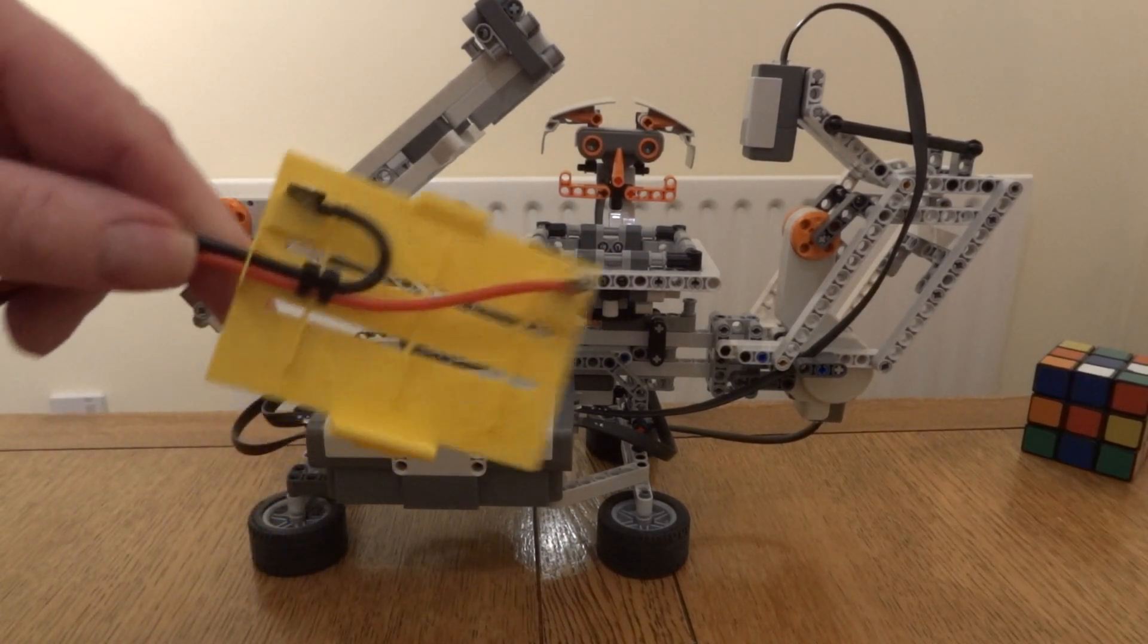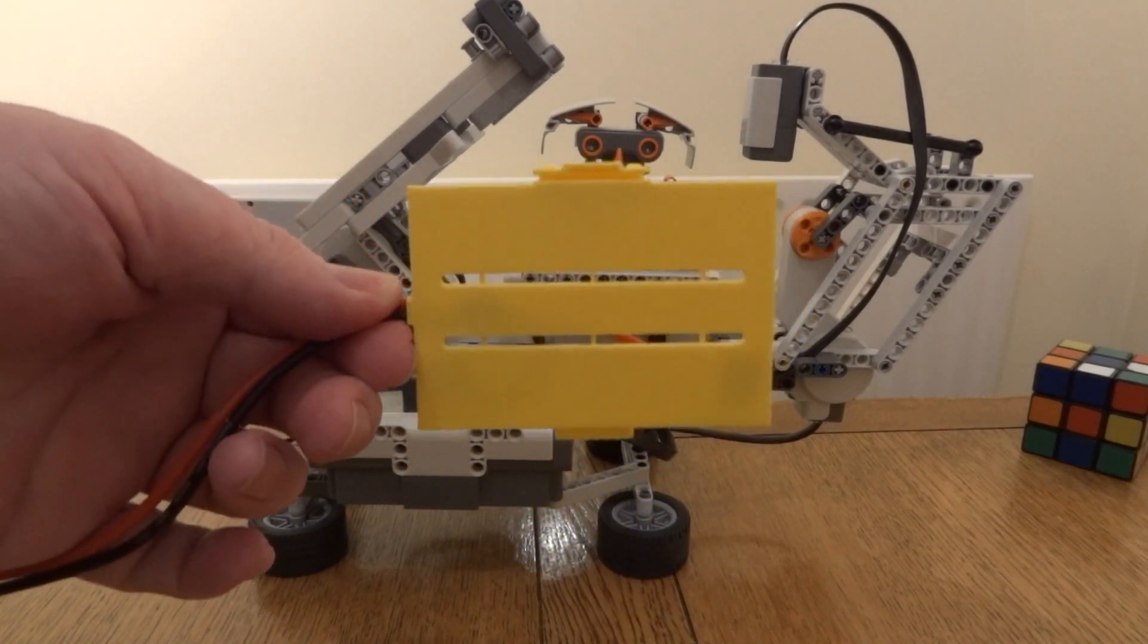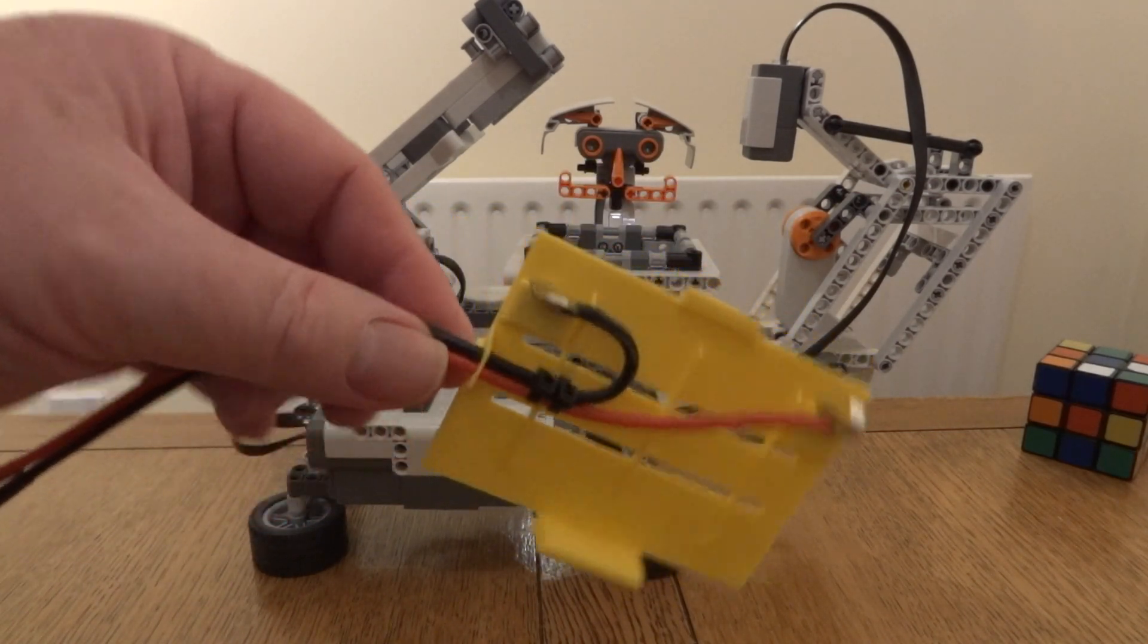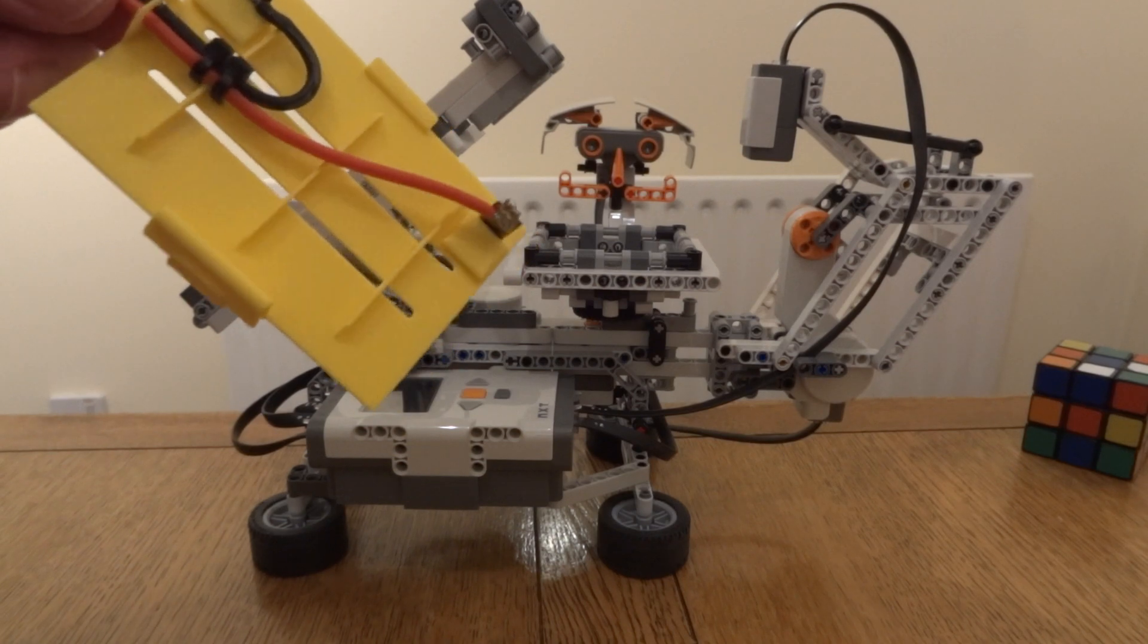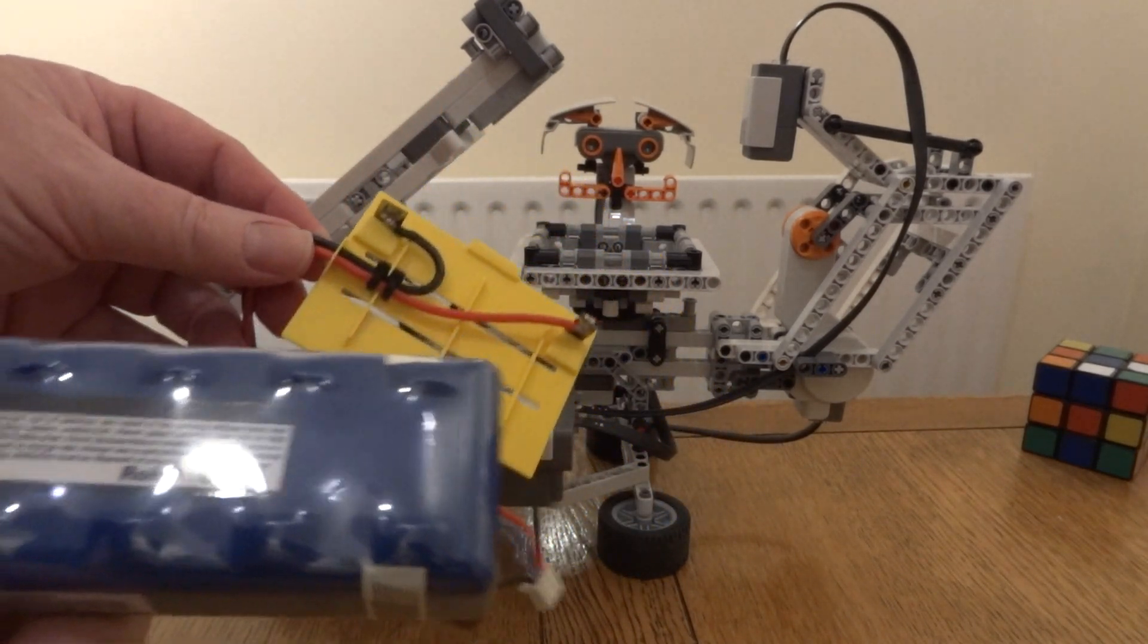Normally the NXT runs on AA batteries but it eats them very quickly. So I made this little adapter plate so I can run it off a bigger battery.